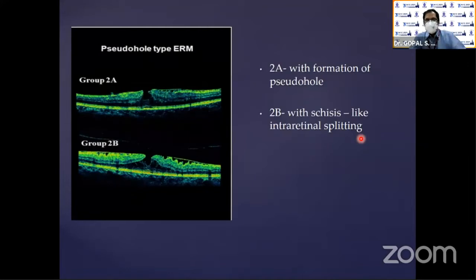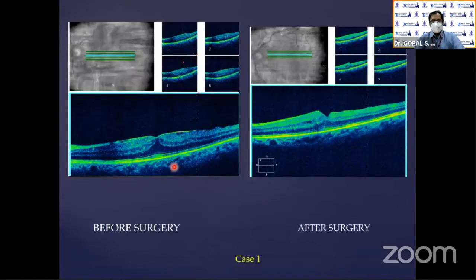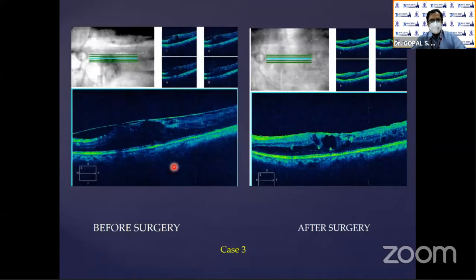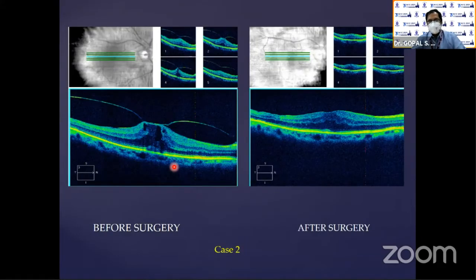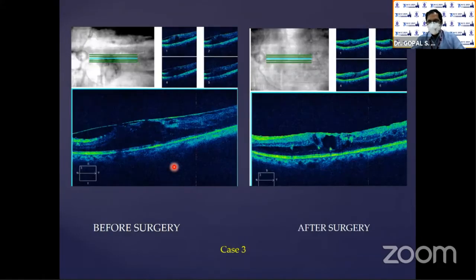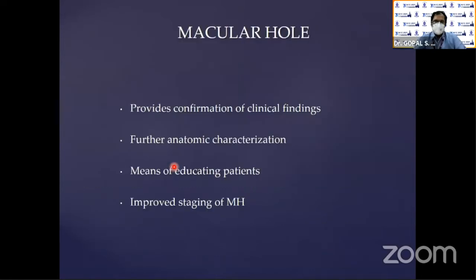Then you move on to type 2A and 2B. Type 2A has a pseudo-hole, and type 2B has a pseudo-hole with schisis as well. These are some examples of epiretinal membranes pre- and post-surgery, and vitreo-macular tractions — both focal and broad — pre- and post-surgery.